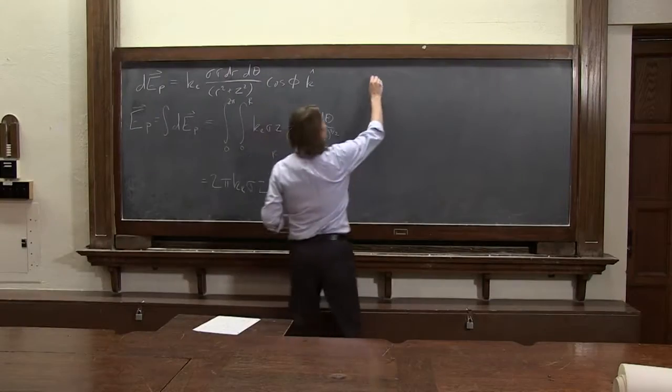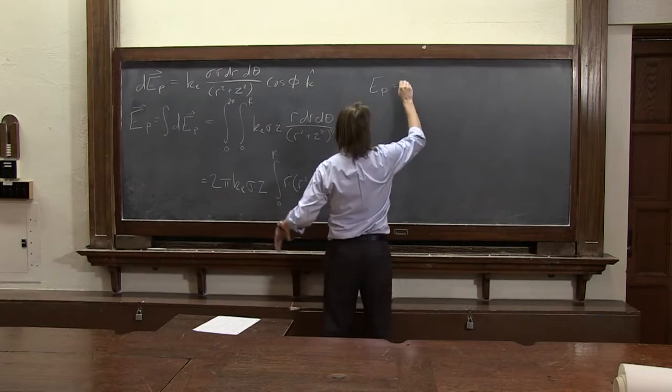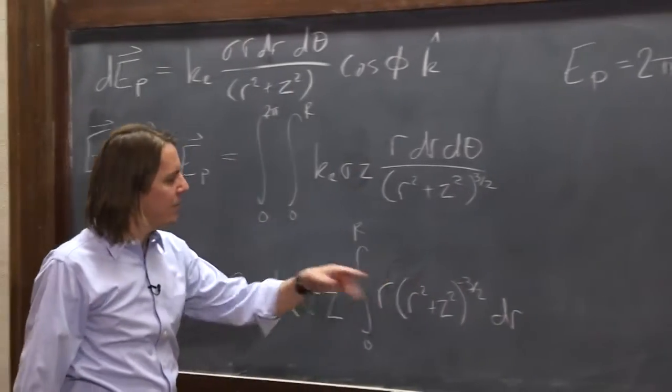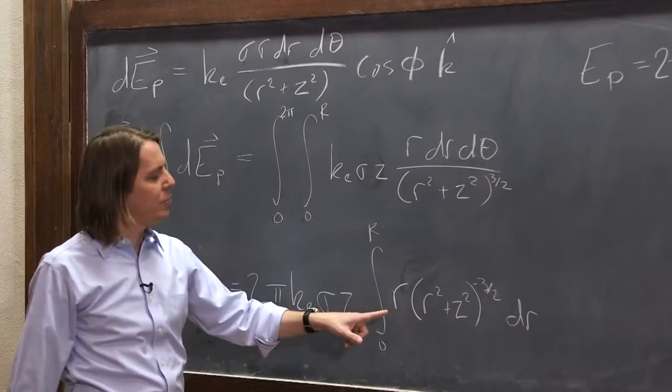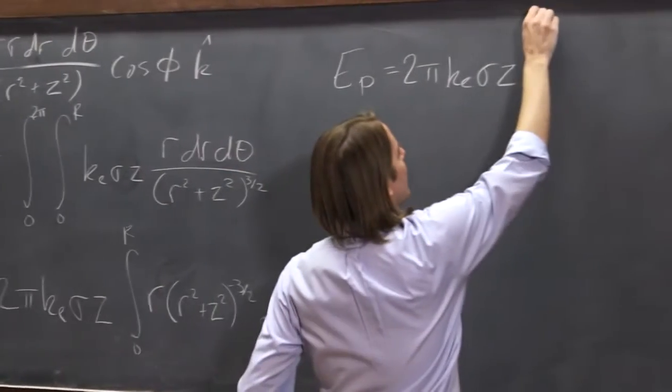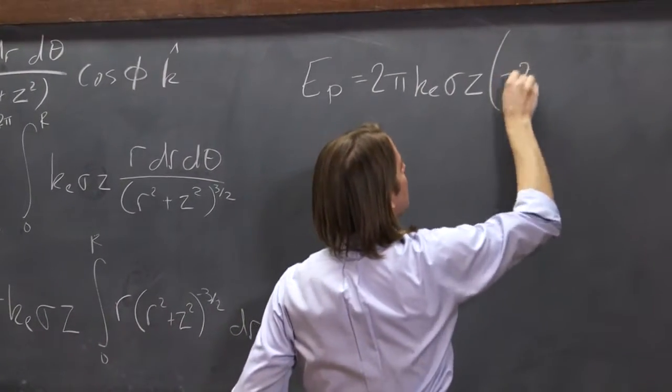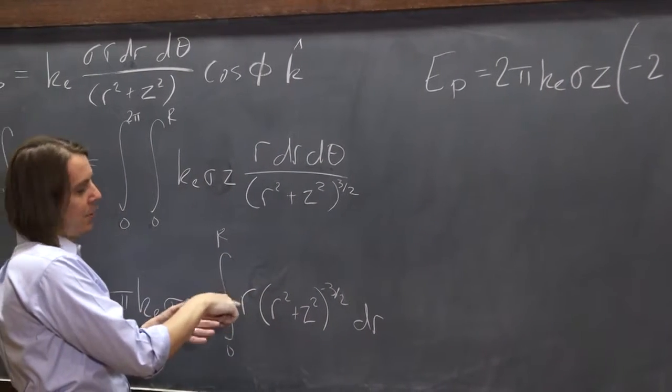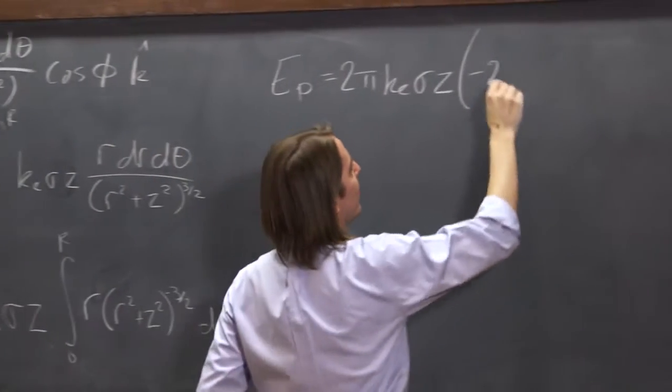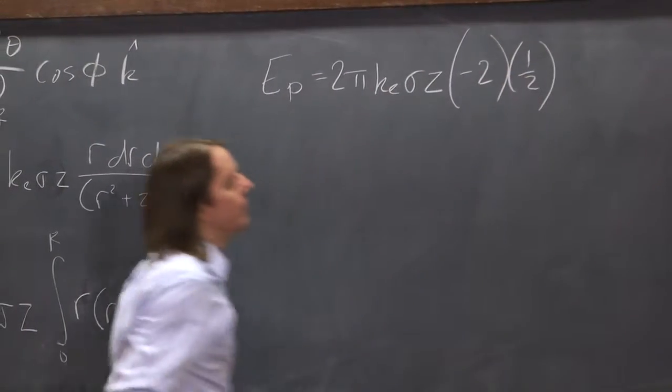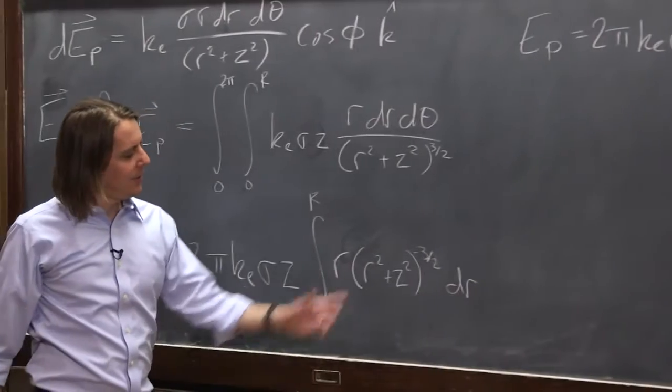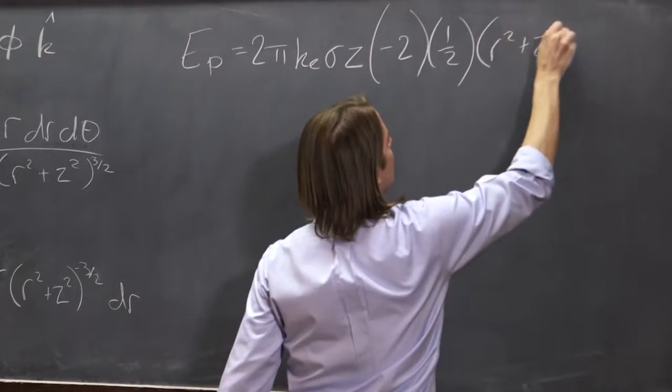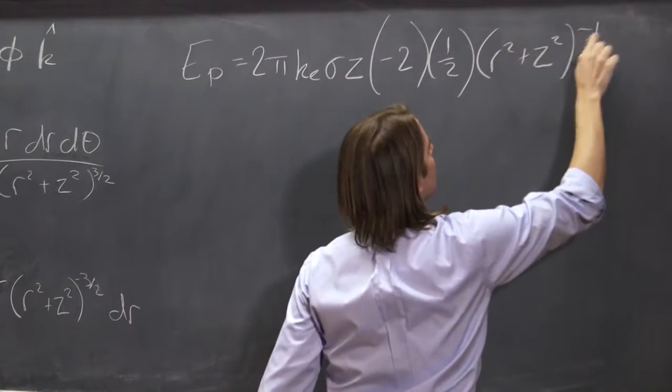So if we keep going then, e p is, let's keep our constants, 2 pi, ke, sigma, z. And if we want to integrate this, this one's actually doable. Minus 3 halves becomes minus 1 half. You divide by that, that becomes minus 2. And then you also divide by the derivative. You divide by 2r, the r goes away. So you're also multiplying it by 1 half, doing that again. And then it becomes this to the minus 1 half. r squared plus z squared to the minus 1 half.